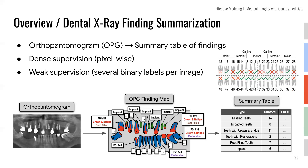In terms of supervision, on top of the image, we often have pixel-level supervision in the form of segmentation or detection annotation. In this work, we also want to try whether we're able to add a new modality of supervision called weak supervision — the dentist only has to label 32 binary labels indicating whether each tooth is present. For dense supervision, the dentist has to sit in front of a computer making dots for up to 30 minutes to annotate a full image. But for weak supervision, they only have to check several checkboxes to see which of the 32 teeth are present — a lot faster.